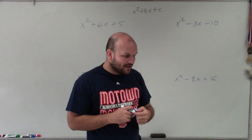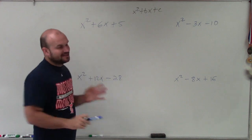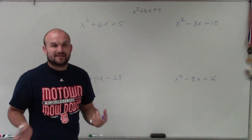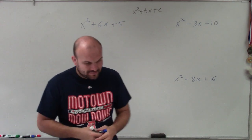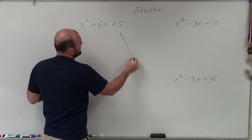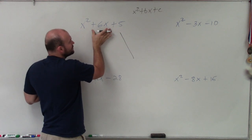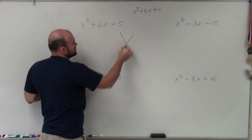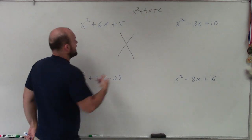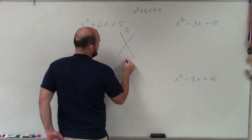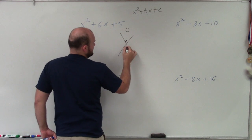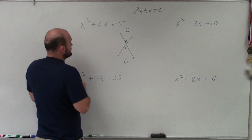I'm going to alternate by doing each method. The first one — I like to use the diamond method. If you really have no understanding of factoring, basically all we simply want to do is take this form and rewrite it as a product of two factors: two expressions that when multiplied give us this trinomial. To do that, we label c and b, where c is our constant and b is our coefficient of our linear term.